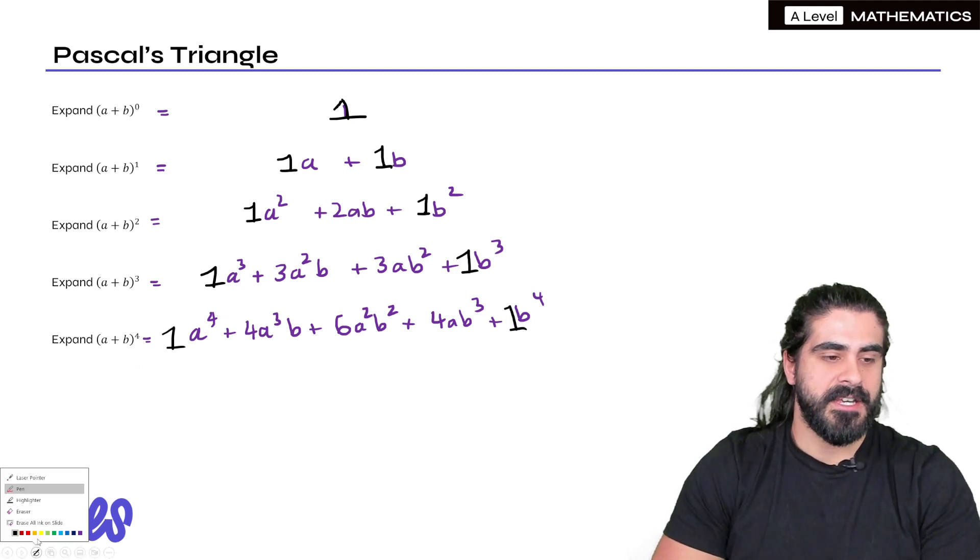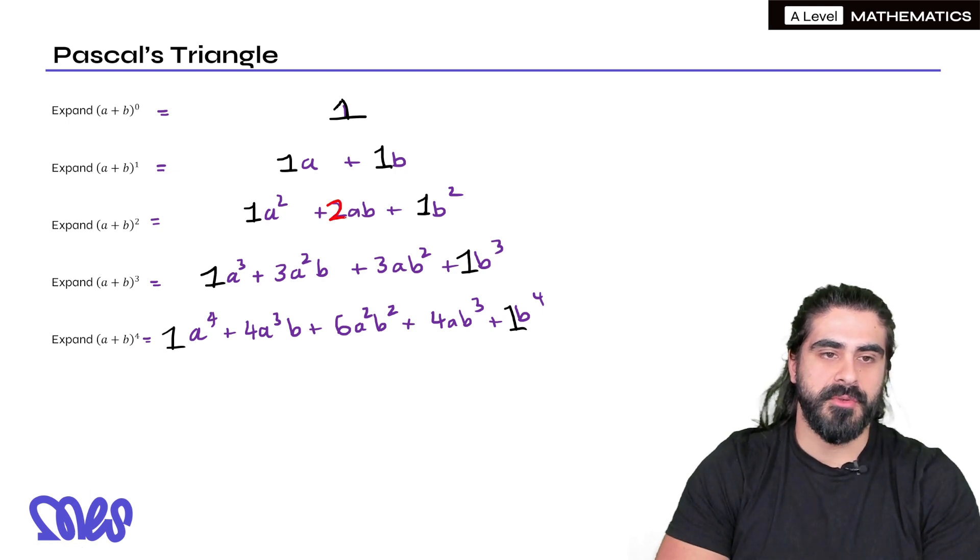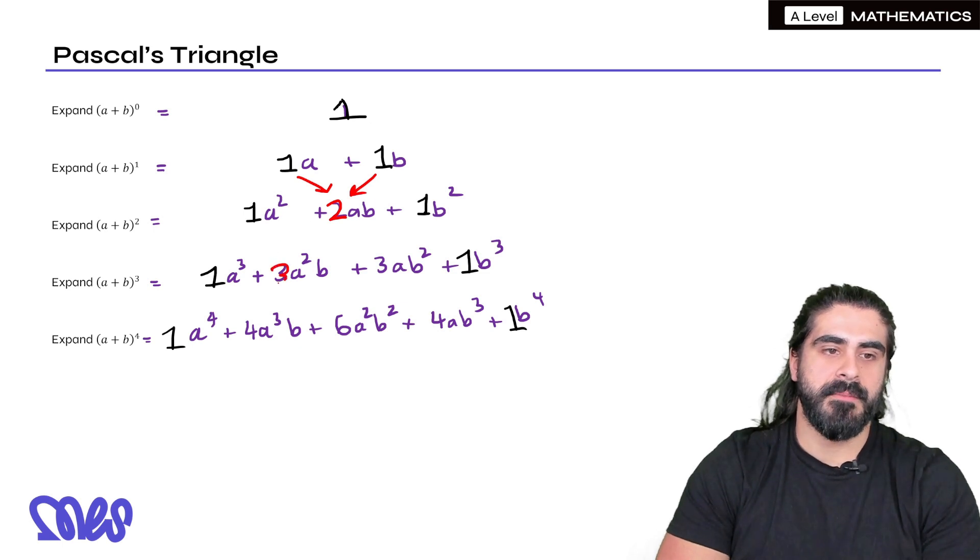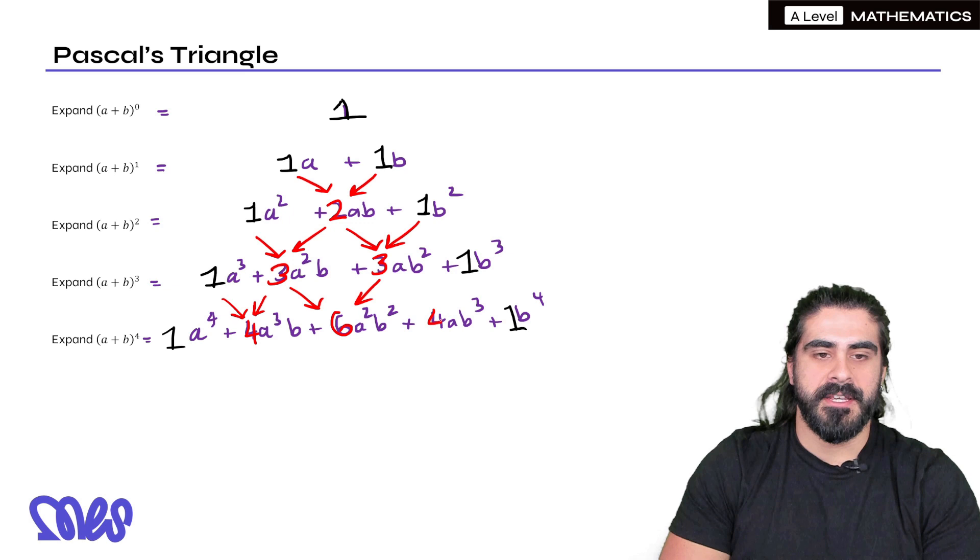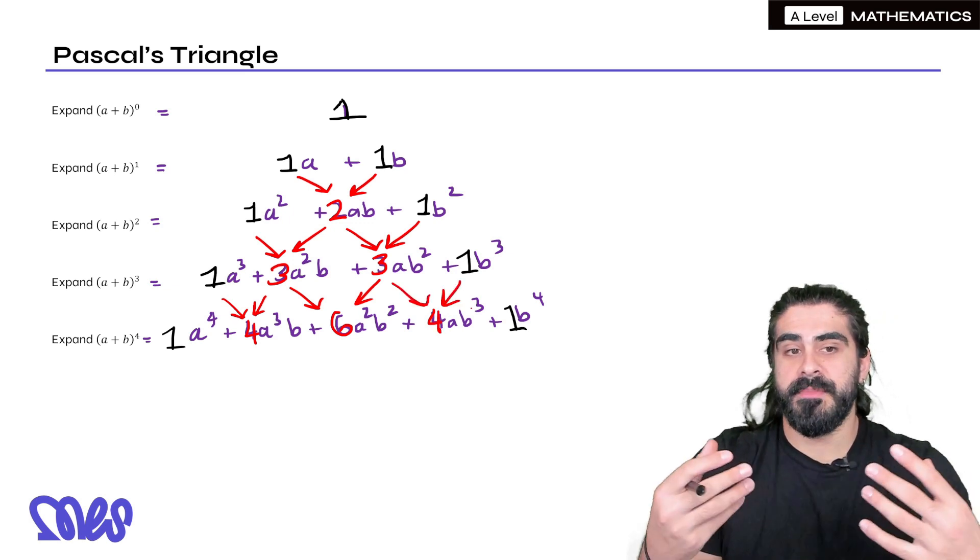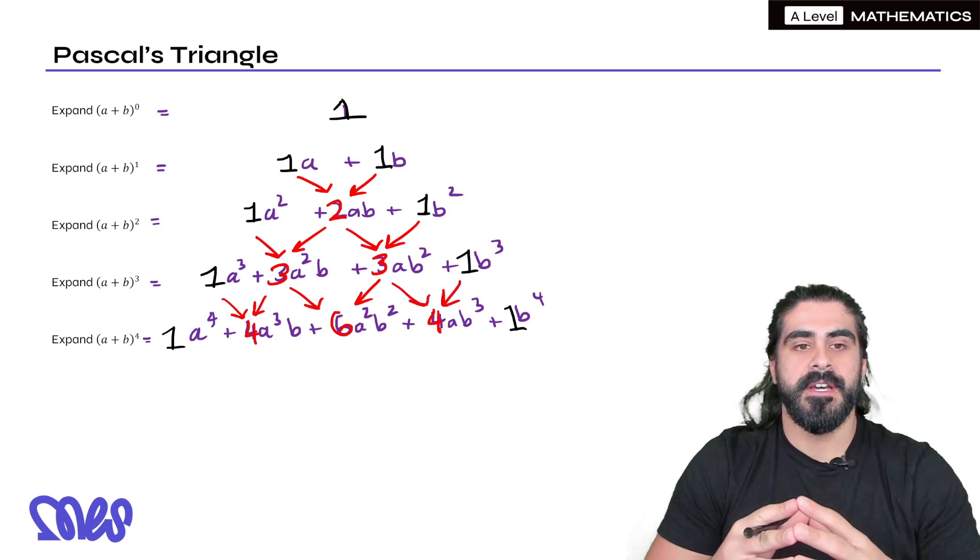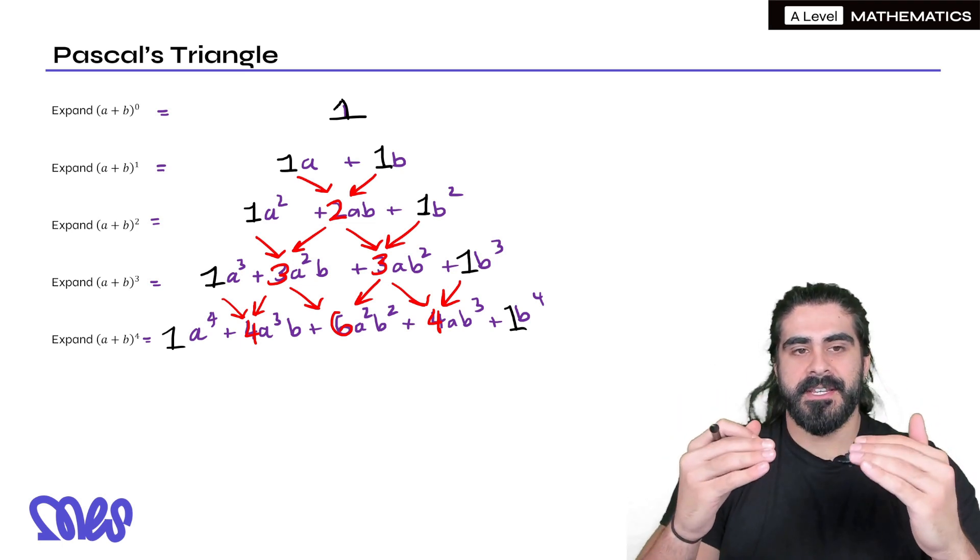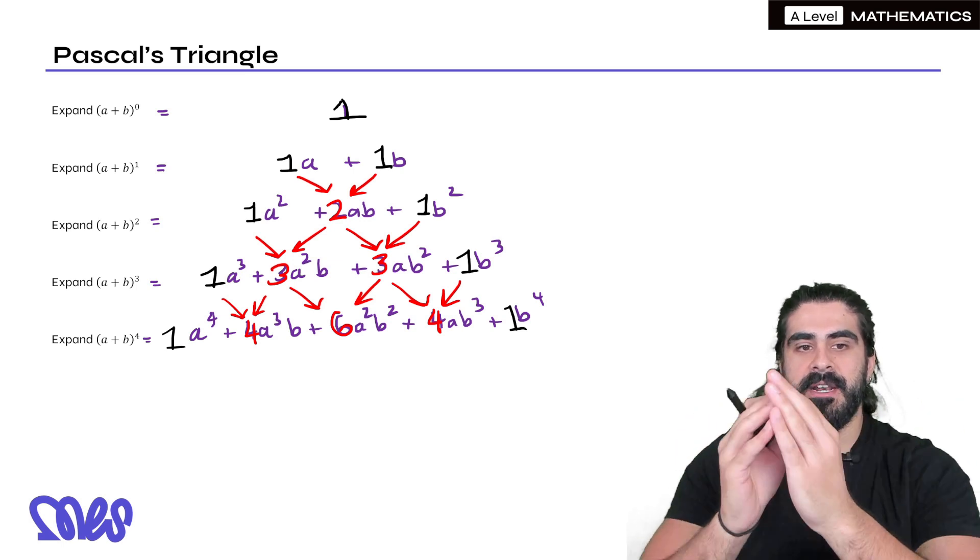What's interesting is the middle numbers. So here we have the number 2. The number 2 is 1 plus 1. Here we have the number 3 which is 1 plus 2. The number 6 is 3 plus 3. Then again we have the number 4, 3 plus 1. So you might also be seeing symmetry. Pascal's triangle is symmetrical and to find the next line you're just adding the two numbers directly above.